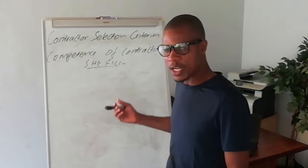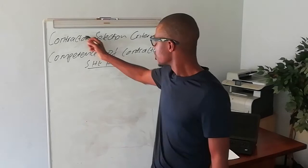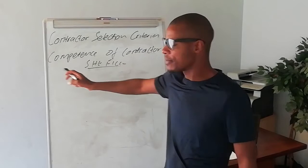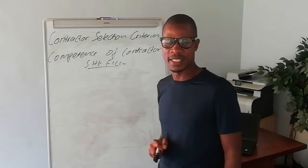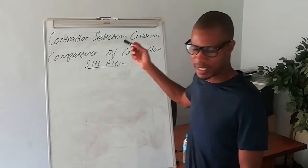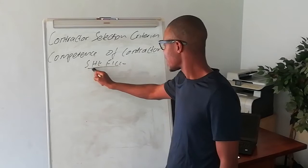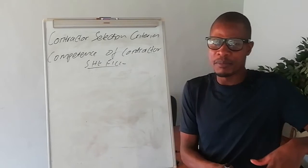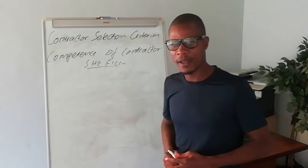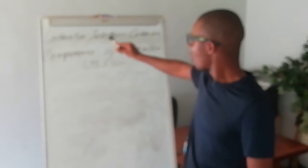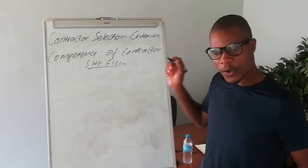So how can we easily remember or unpack this so that it becomes easy? The best way to understand the contractor selection criteria without struggling is this: if you are able to develop a safety file, then the contractor selection criteria or the competence of your contractor is actually easy. The things that are inside the safety file are actually the same. I'm referring to the ordinary safety file that you submit to the client.